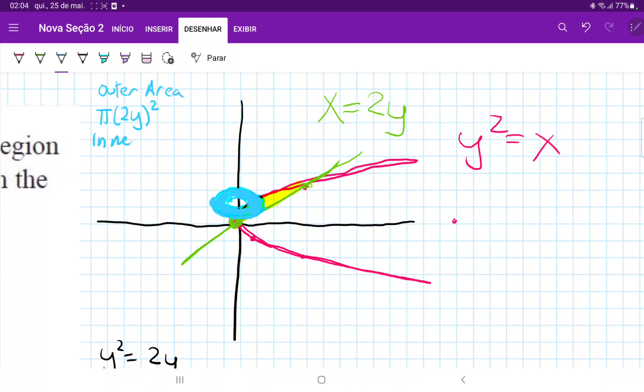So by 2y squared. And the inner area is given by wherever it touches the pink curve. So like the smallest little disk. So it's pi times y squared squared. So we can see that we're summing up the outer minus the inner from 0 to 2.